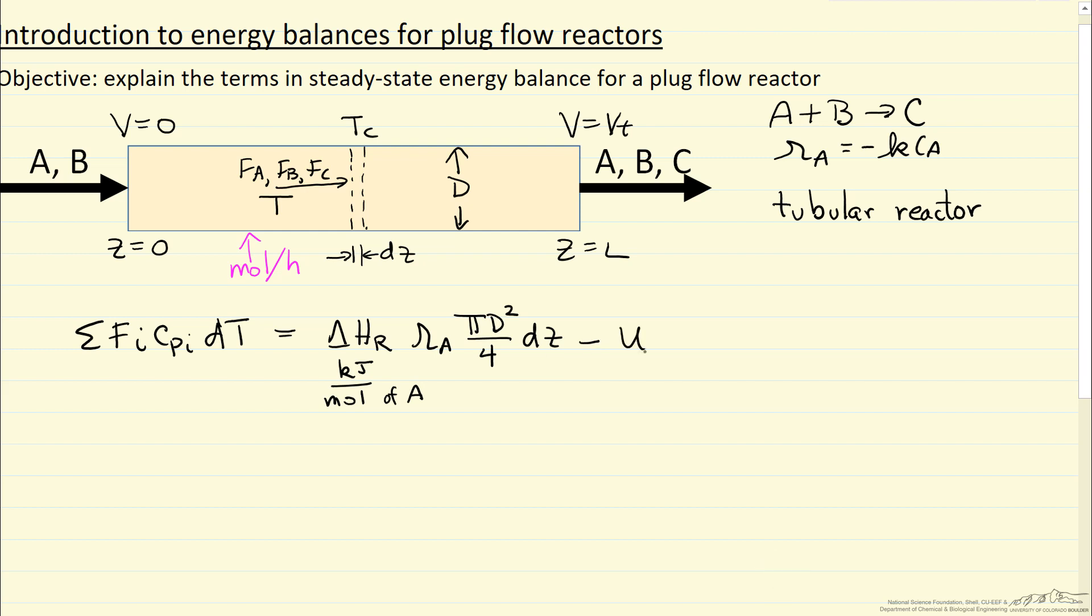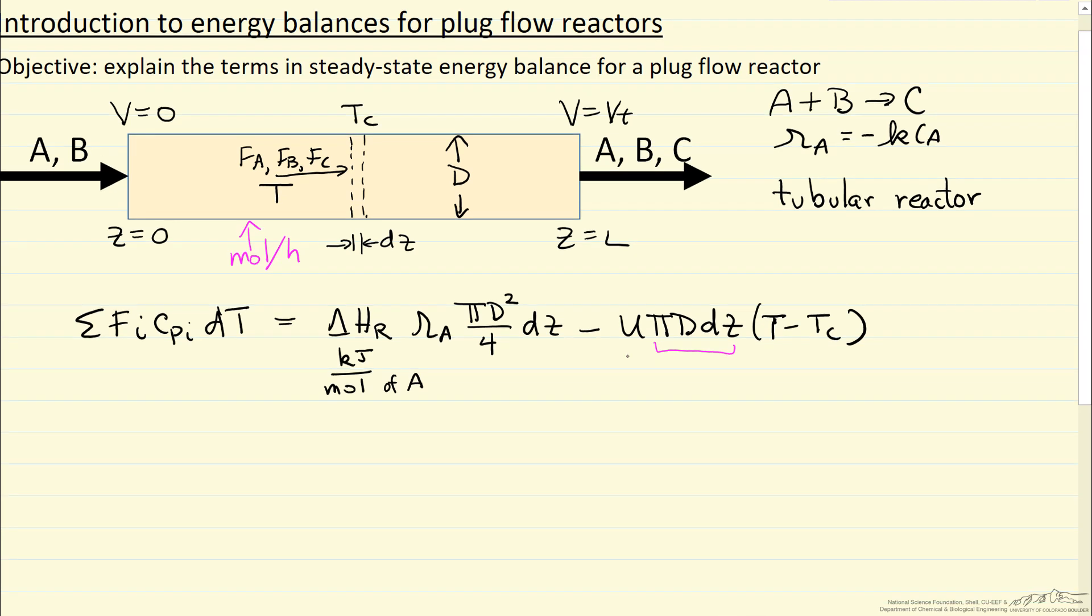And then heat is removed by heat transfer, so the heat transfer coefficient U, pi diameter dz, T in the reactor minus TC. So note, this is the heat transfer area, this is the heat transfer coefficient. And this cross-sectional area, let's call that AX.